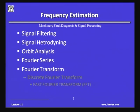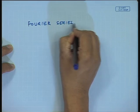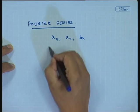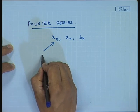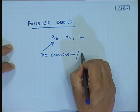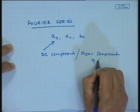Mathematically, if the function is periodic and mathematically describable, we could use the expansion of Fourier series to find out the frequency content in the signal. When we do Fourier series, we find coefficients a-naught, a_n, and b_n. The a-naught coefficient is actually independent of frequency and is known as the DC component of the signal, or the mean component of the signal.